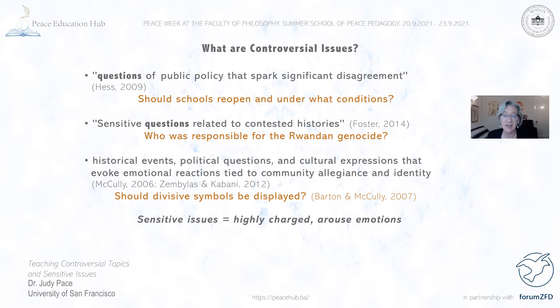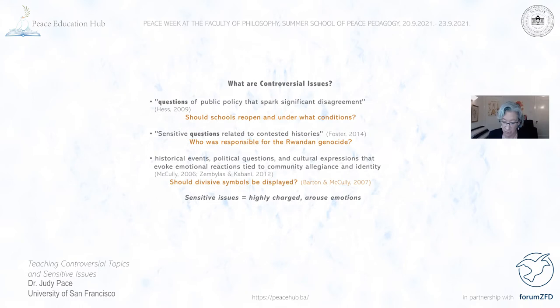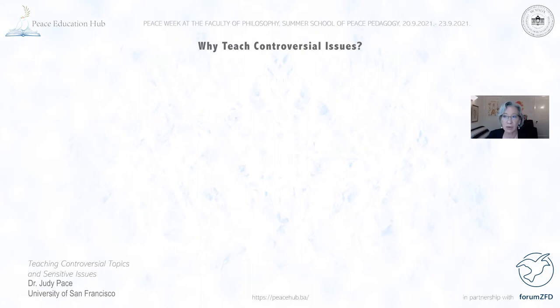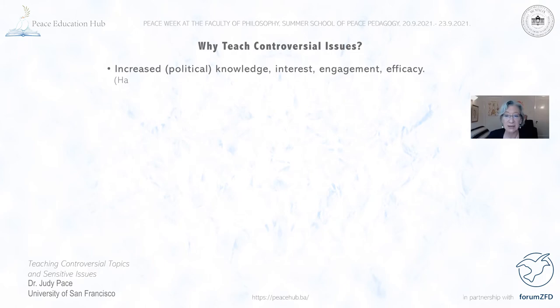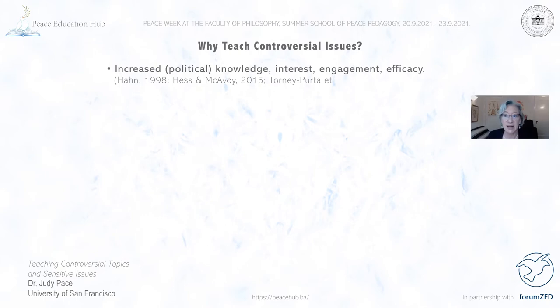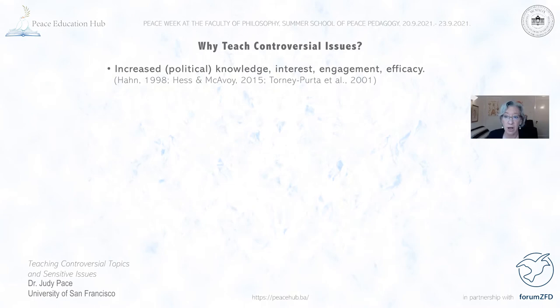Sensitive issues overlap with controversial issues — those are the ones that are highly charged and arouse emotions. So why do we want to teach controversial issues given how politically and emotionally charged they may be? Research tells us that discussion of controversial issues in an open classroom, where students feel they have the right to disagree with one another and with the teacher, leads to increased political knowledge, interest, engagement, and efficacy. This is incredibly important because apathy among citizens and young people in particular is a huge problem.